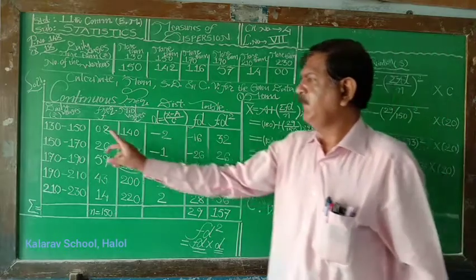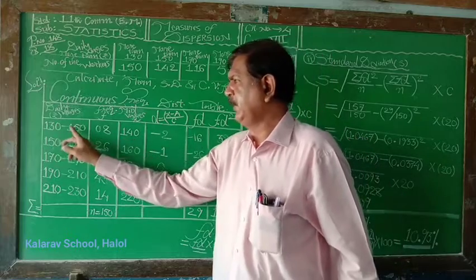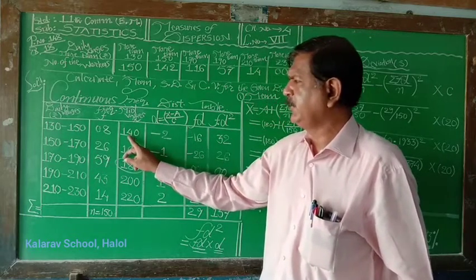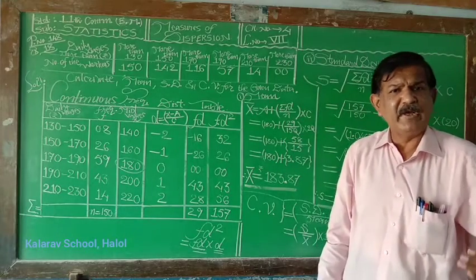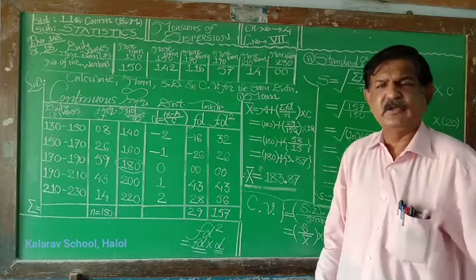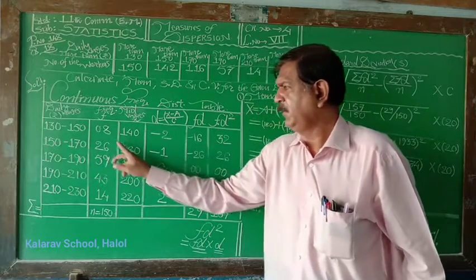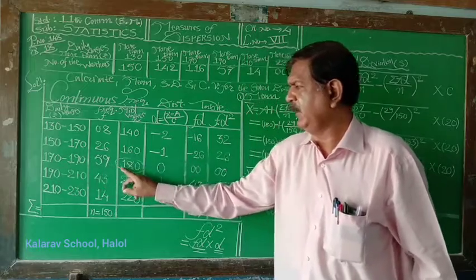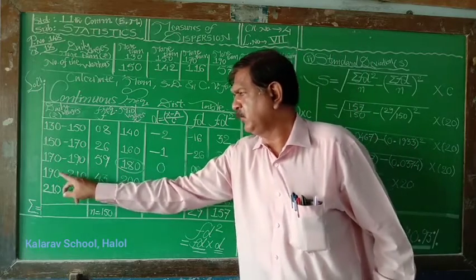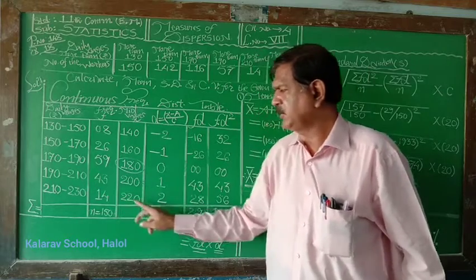Mid-value is upper value plus lower value divided by 2. 130 plus 150, 280, divided by 2 is 140. Same way, mid-value or central value or central point for the given class. 150 to 170, mid-point 160. 170 to 190, mid-value 180. 190 to 210, mid-value 200. 210 to 230, mid-point is 220.